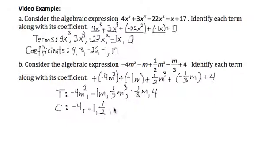And negative 1 third is the coefficient of negative 1 third m. And remember, that started as negative m over 3. And then I'm going to list the constant term 4. Its coefficient is just 4.